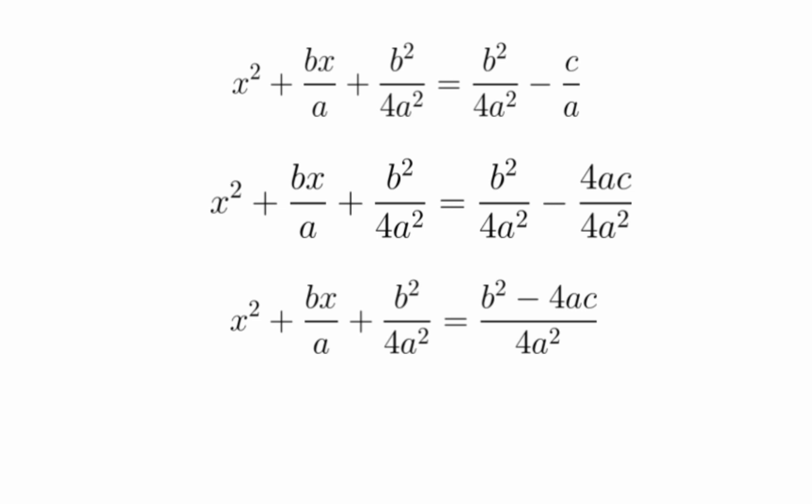And now, we just will combine that fraction. So, now it's one big fraction, b squared minus 4ac over 4a squared. And, as predicted, we're going to square root everything.